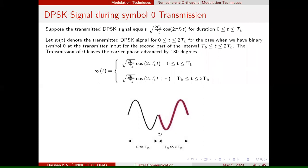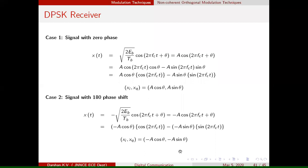During any time interval, the received signal X(t) may contain zero phase, represented as sqrt(2Eb/Tb) * cos(2π fc t). The theta term is due to the channel effect. Once simplified, the signal is expressed in terms of in-phase and quadrature phase components, as shown in the simplification.